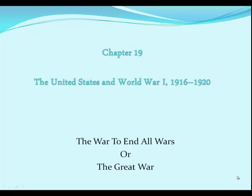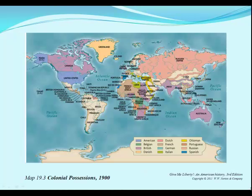Chapter 19: United States in World War One, 1916 through 1920. It was called the war to end all wars, or the Great War. The Spanish-American War made the United States an international empire, but compared to Europe's colonial empires, our overseas possessions were small. Our empire was not so much territorial as it was economic and cultural.